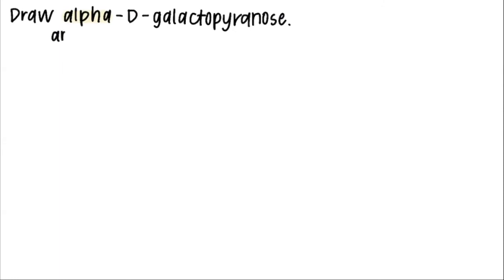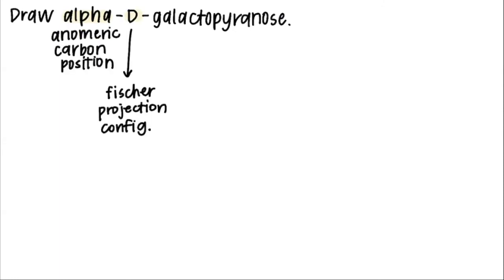The alpha tells us the anomeric carbon position. The D tells us the fissure projection configuration. The sugar is typically mentioned in the first part of that last word. In this case, we'll be looking at galactose. And the last part tells us if it's a five or six-membered ring.